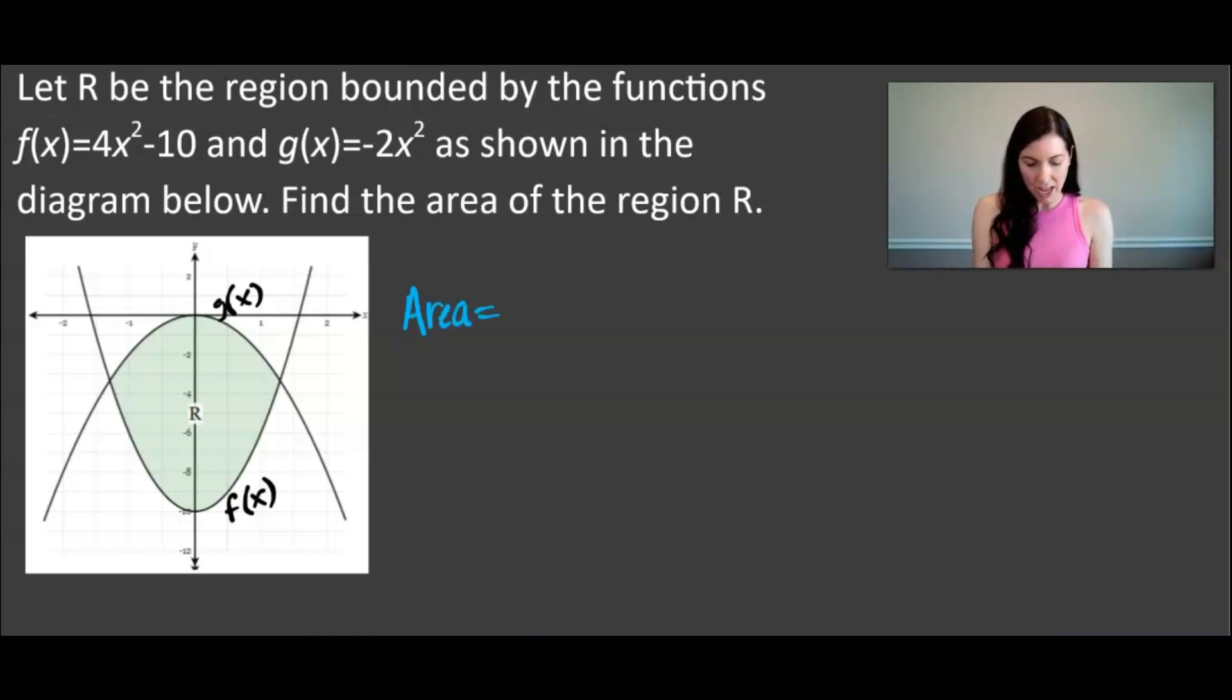So to find the area I'm going to use an integral because that means I'm going to sum up an infinite amount of rectangles. So envision these but an infinite amount from the first x value which was -1.2909944 and then positive 1.2909944. And as I mentioned we're going to take the top function minus the bottom function. The top function was g(x) which is going to be -2x² minus the bottom function which is 4x² - 10.